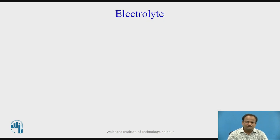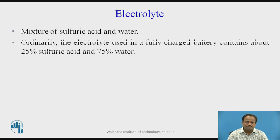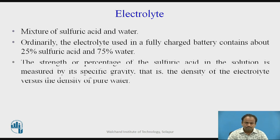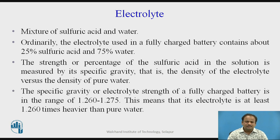The next very important part is the electrolyte. A mixture of sulfuric acid and water is the electrolyte. The electrolyte used in a fully charged battery contains about 25% sulfuric acid and 75% water. The strength or percentage of the sulfuric acid in the solution is measured by its specific gravity — that is, the density of the electrolyte versus the density of pure water. The specific gravity of a fully charged battery is in the range of 1.260 to 1.275, meaning the electrolyte is at least 1.260 times heavier than pure water.